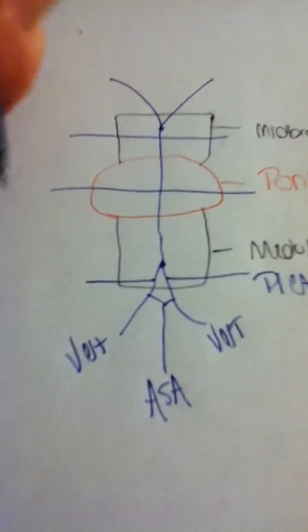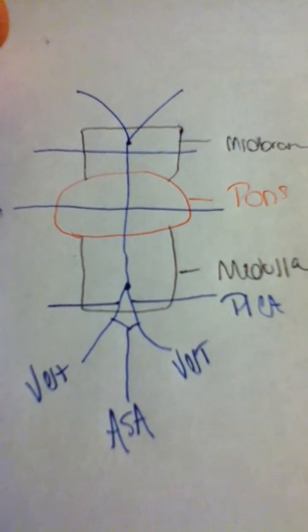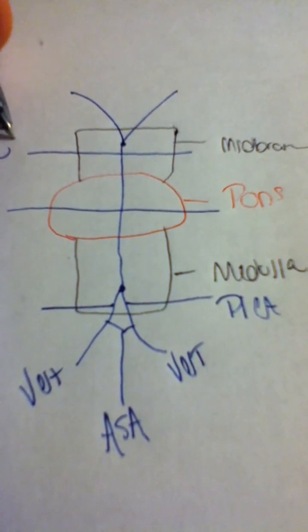Then up here, we're going to have AICA, anterior inferior cerebellar artery. Then up here, we're going to have superior cerebellar artery.